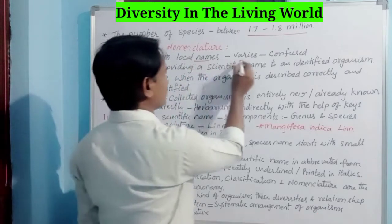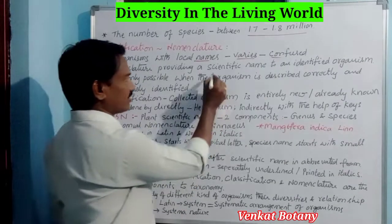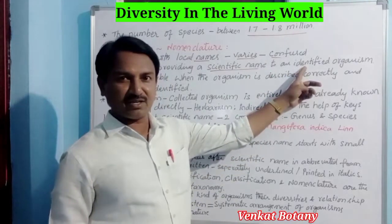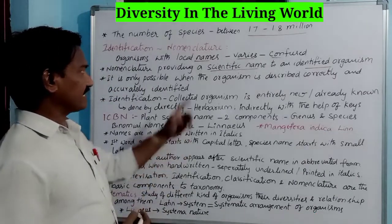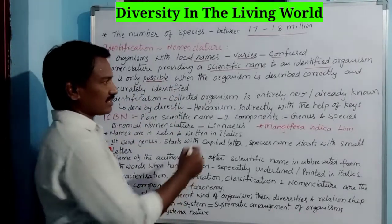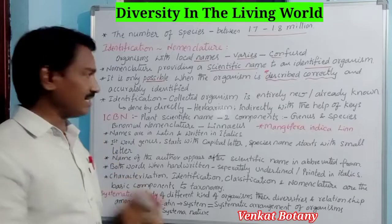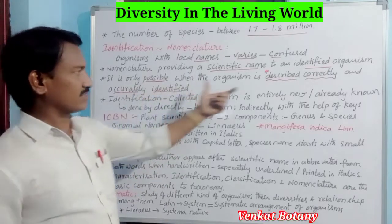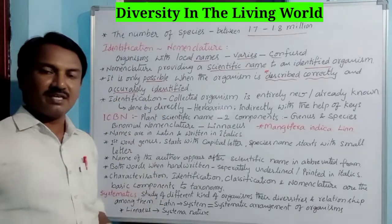Organisms with local names vary and cause confusion, so nomenclature provides a scientific name to an identified organism. This is only possible when the organism is described correctly and accurately identified. So, correctly describing an organism and accurately identifying it are the basis of nomenclature and identification.